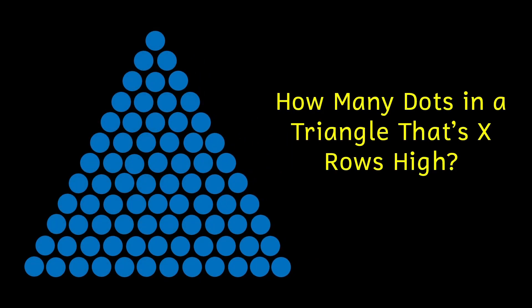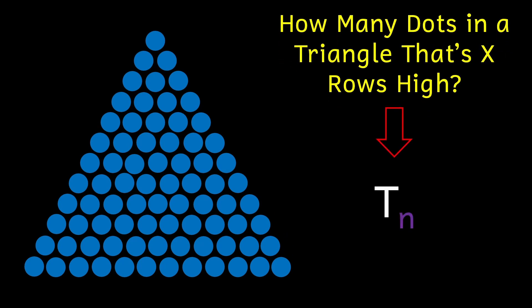If we have a triangle that is x rows high, how many dots do we need to create it? In pursuit of that answer, they came up with a concept called triangular numbers, denoted by T of n. What this T of n tells us is that for a triangle of n rows, the number of dots needed to create that triangle is equal to this formula.